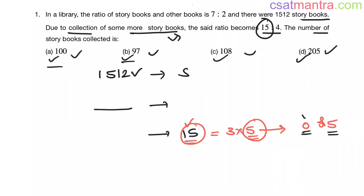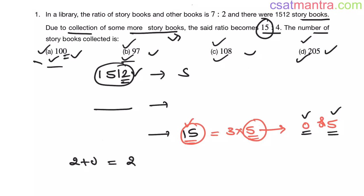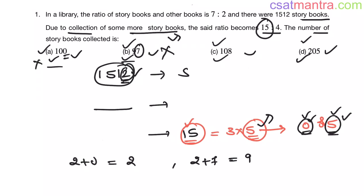Option A: 2 + 0 = 2 — not 0 or 5, so A is not our answer. Option B: 2 + 7 = 9 — not 0 or 5, so B is not our answer. Option C: 2 + 8 = 10, last digit is 0 — yes, this can be our answer. Option D: 2 + 5 = 7 — not 0 or 5, so D is not our answer. Therefore our answer is C.